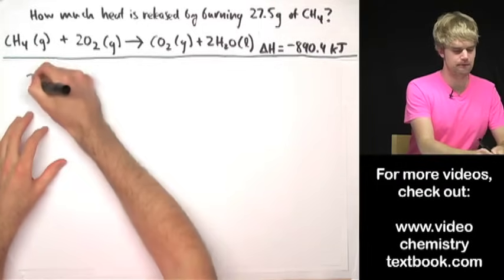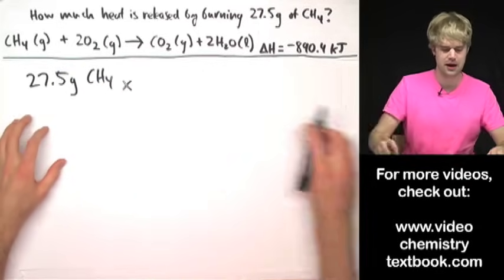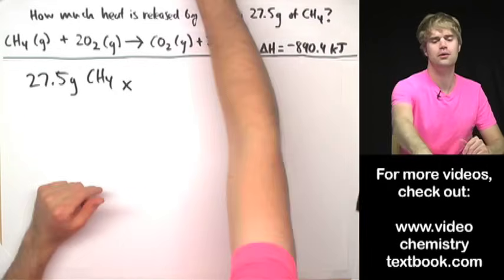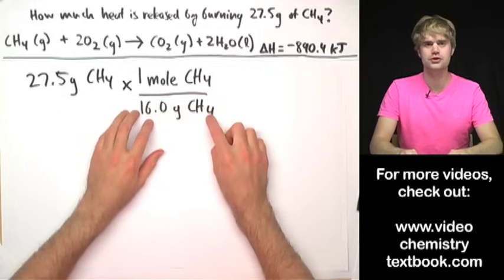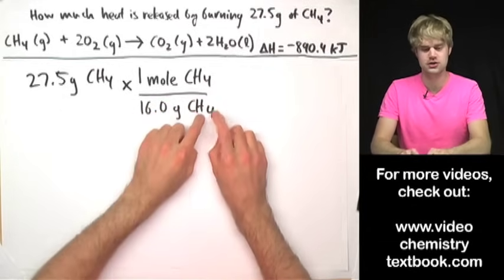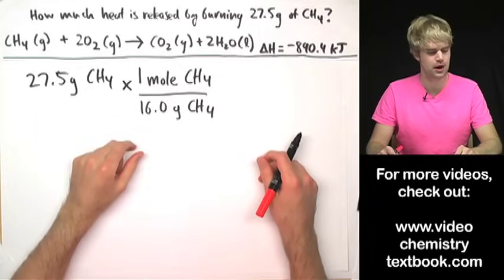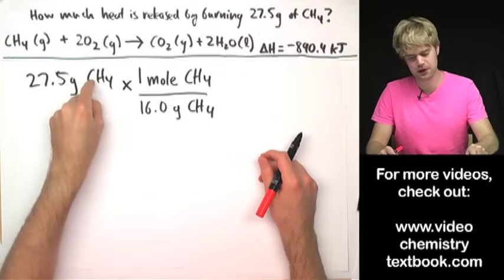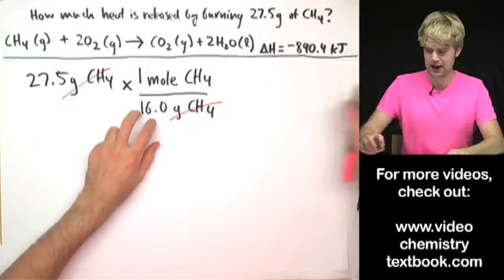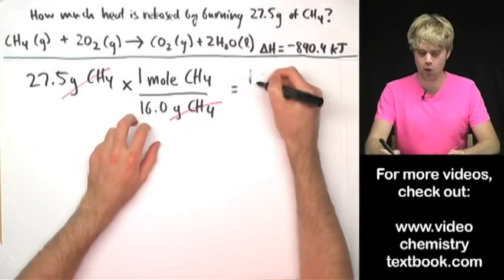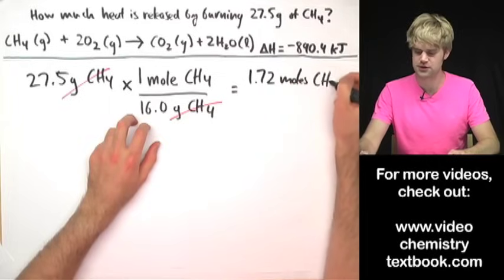The first thing I'm going to do is take 27.5 grams of CH4 and convert that to moles. I'm going to use a conversion factor that includes the molecular weight or molar mass of CH4. I have grams CH4 on top and grams CH4 on the bottom, so they cancel out, and when I do the math I get 1.72 moles of CH4.